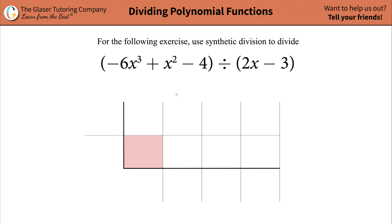There's a certain pattern here. We need to add a term of 0x, because 0 times x is 0, so I'm just adding 0 here. What I need to do is visually see that the coefficient of my x term, which is not represented, is indeed 0. And then it's a minus 4.